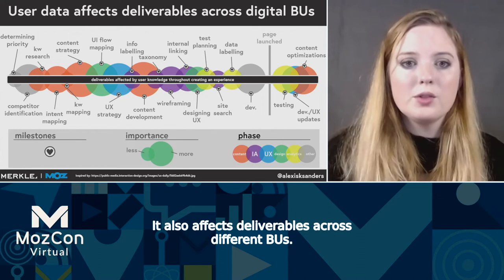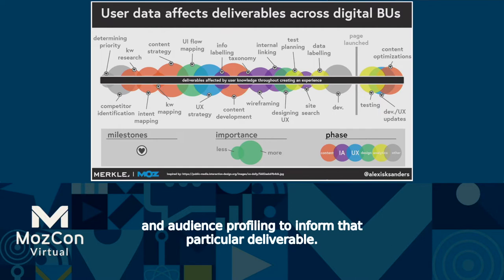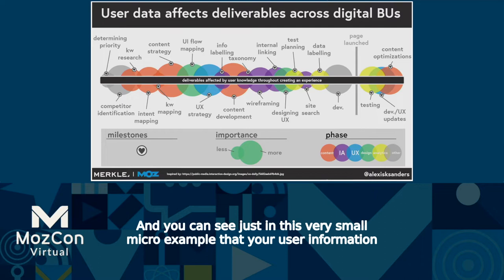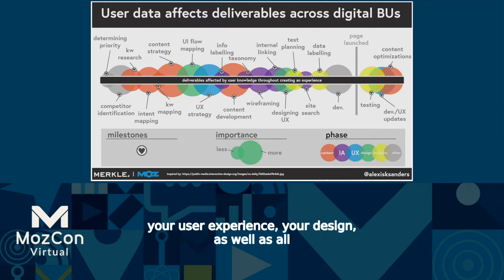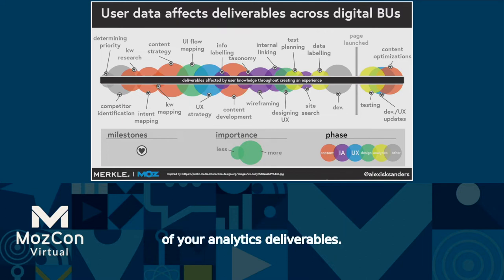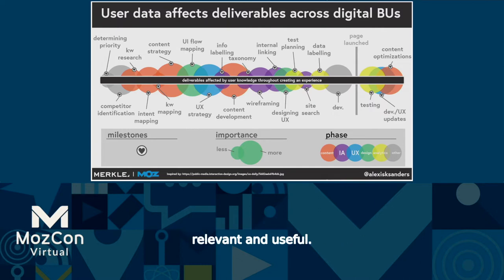It also affects deliverables across different BAUs. Here's just a sample visual of a very small sample of deliverables that use user information and audience profiling to inform that particular deliverable. You can see that your user information affects your content channel, your information architecture, user experience, your design, as well as all of your analytics deliverables — and many, many others as well — which makes it something that's very relevant and useful.